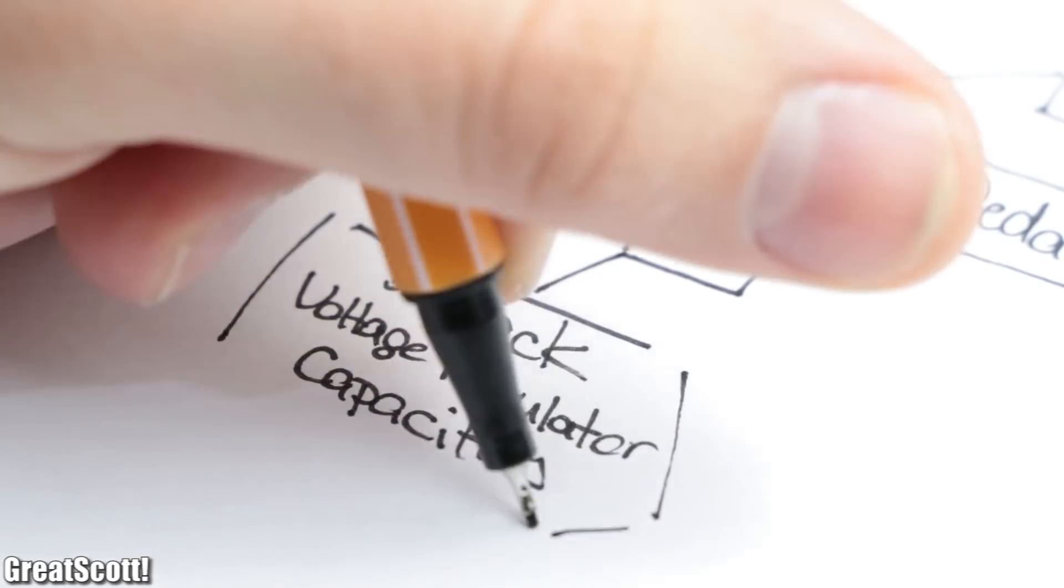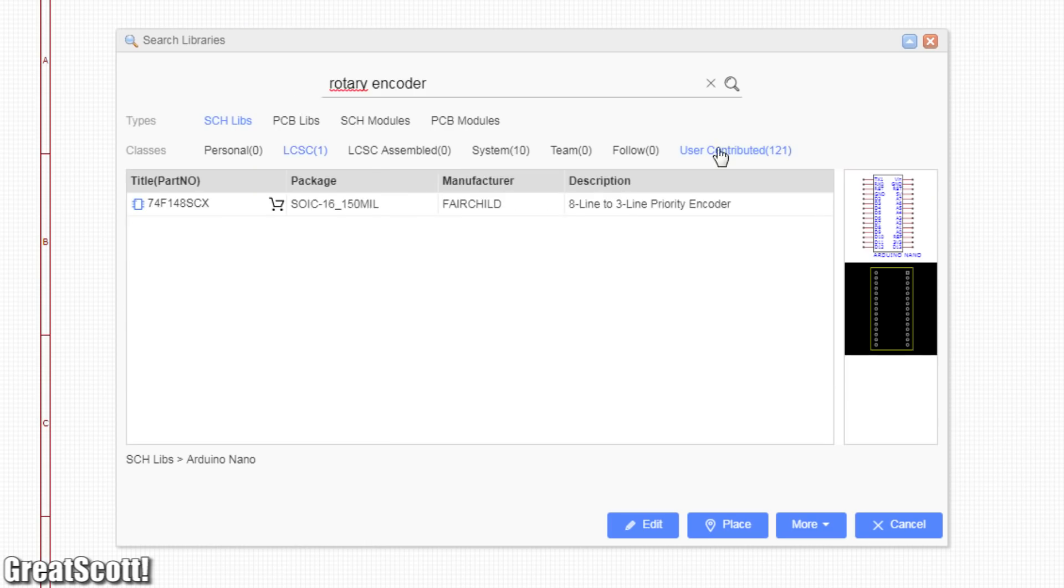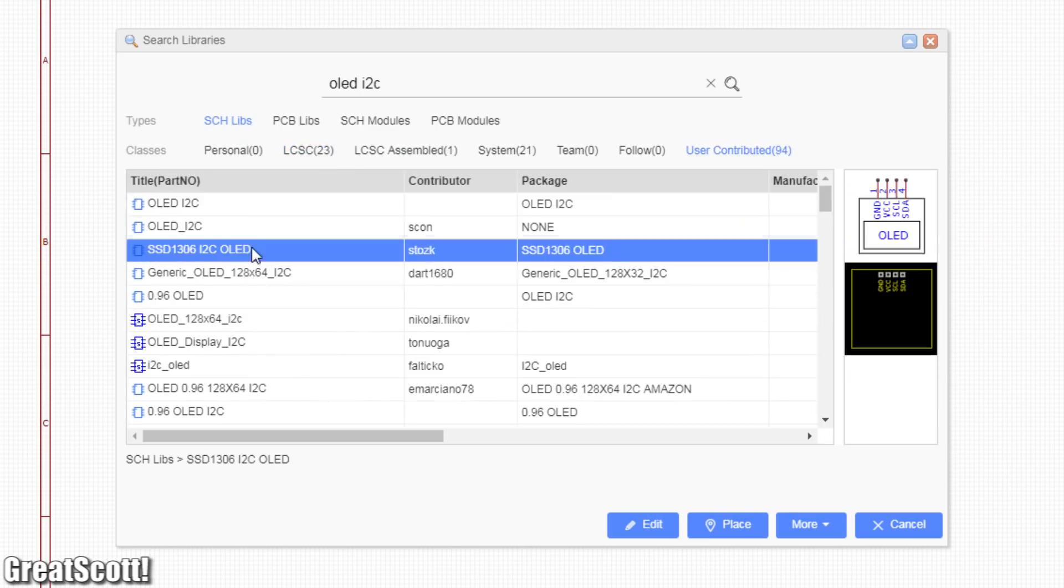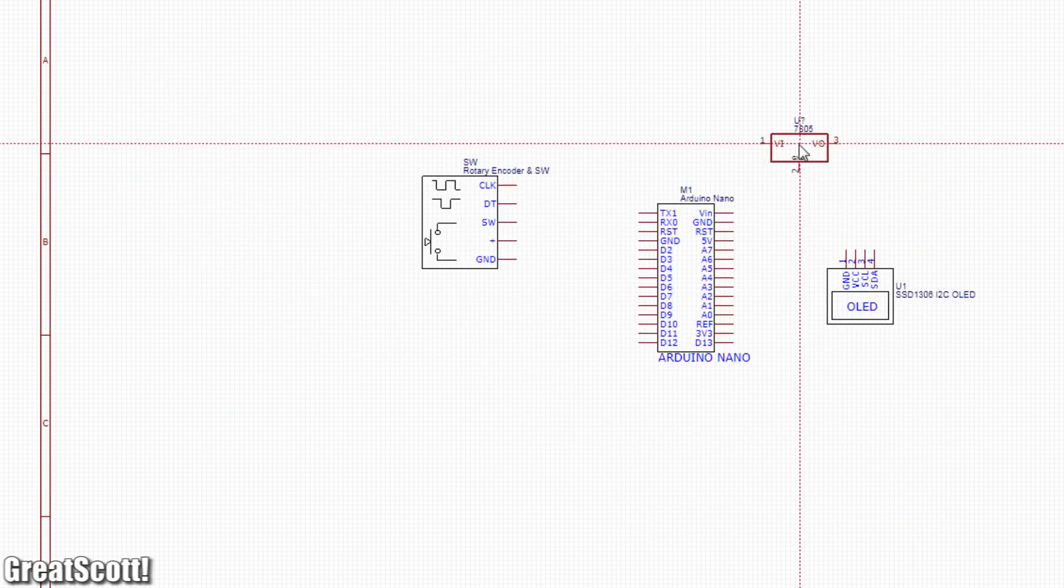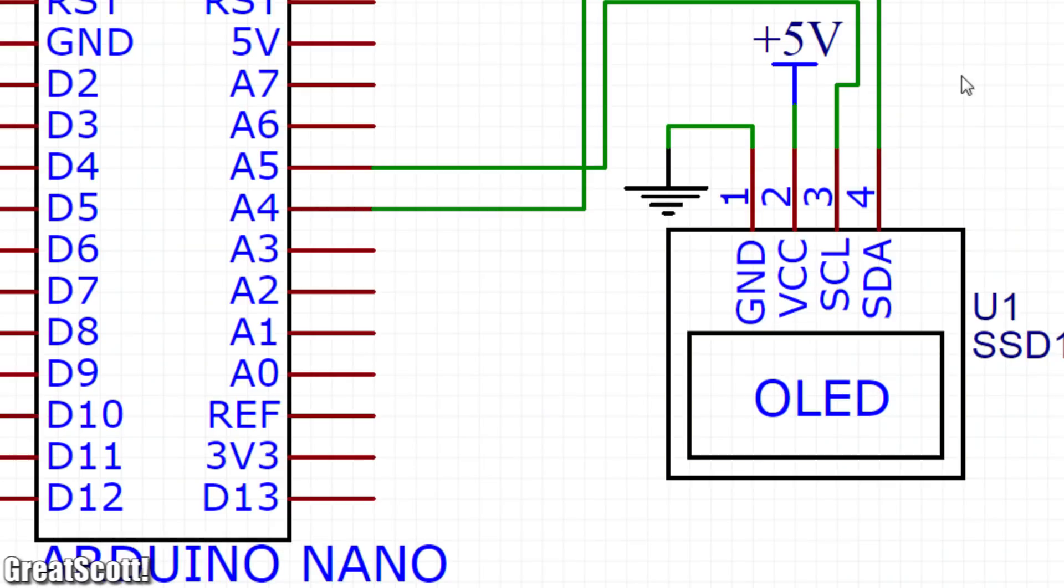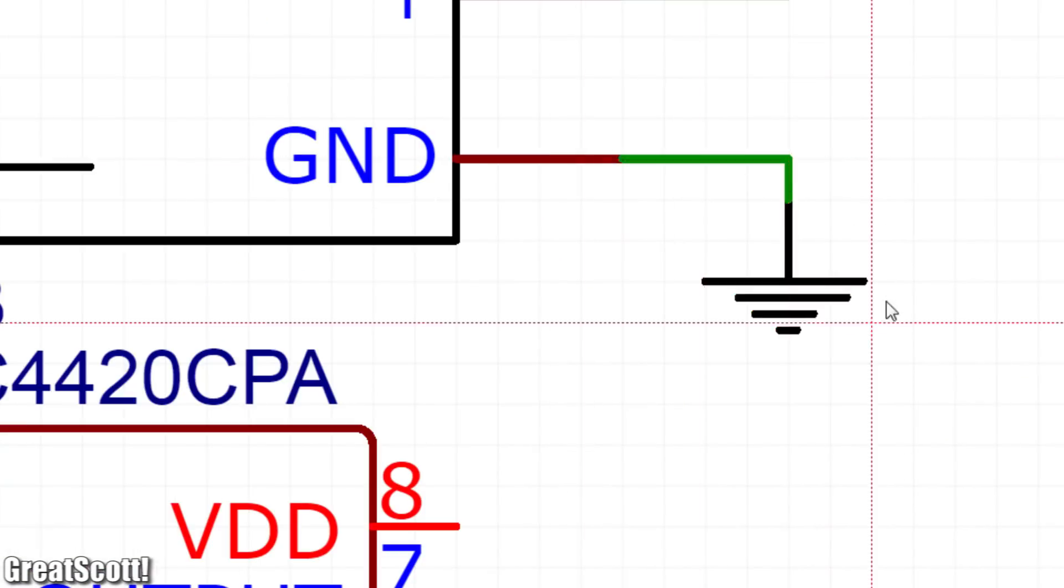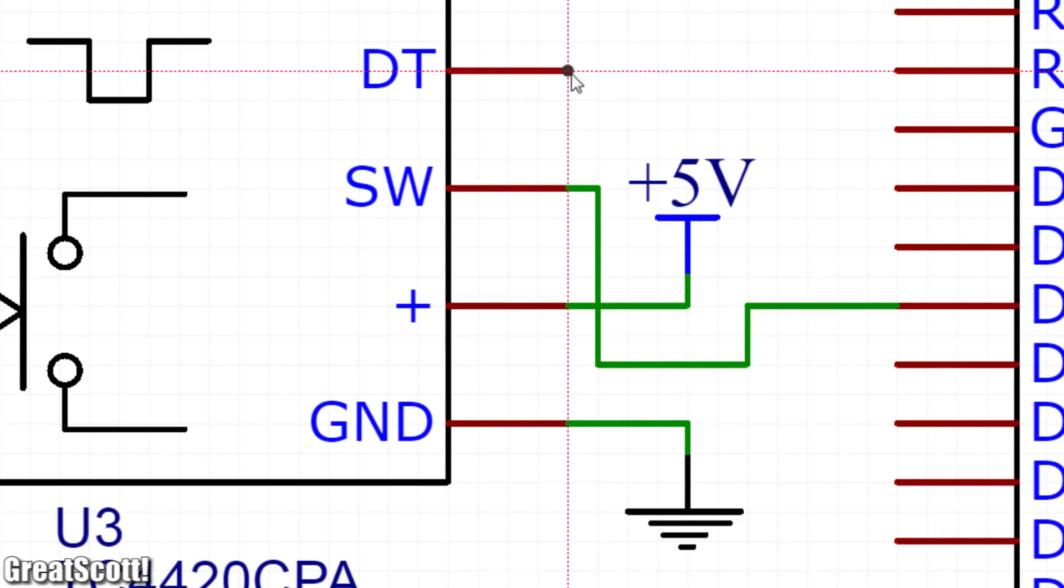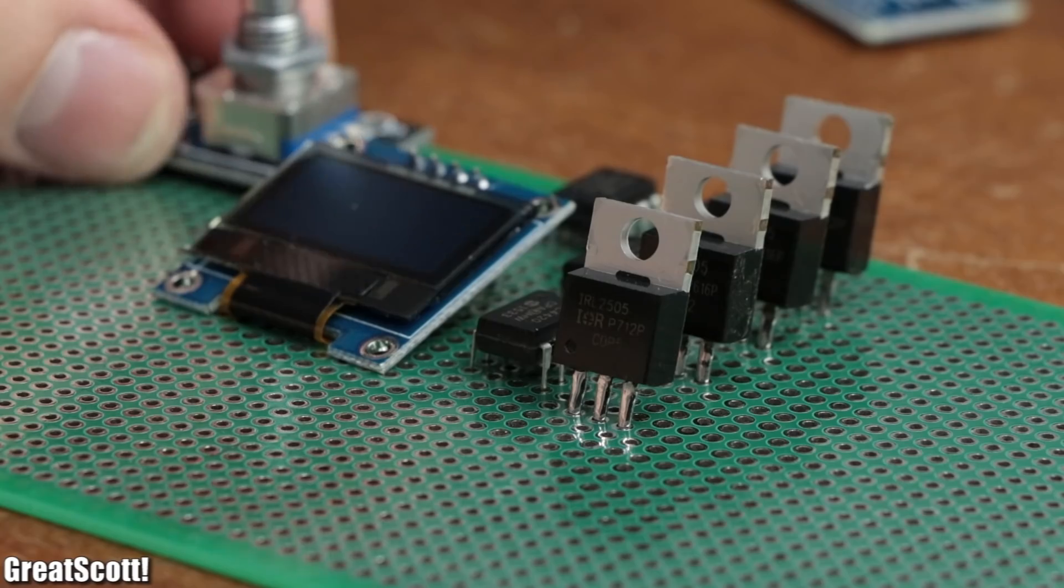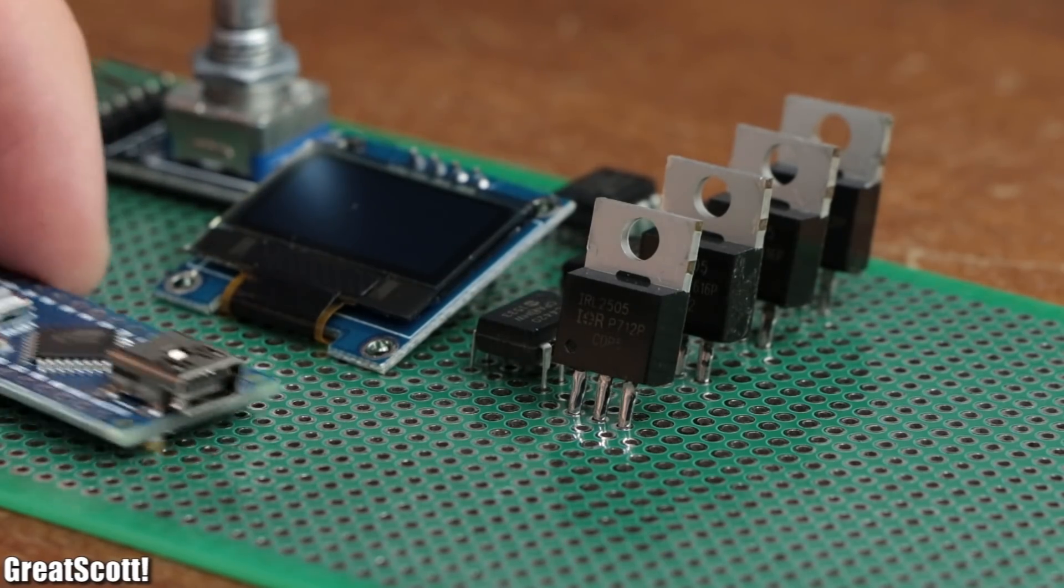To those main components I then added some complementary ones and started turning this theoretical composition of components into a proper schematic through the free online circuit design software called EasyEDA. Not only did I make sure to connect all the components to the correct Arduino pin and counterpart, but also made sure to utilize the correct package with included PCB footprint.